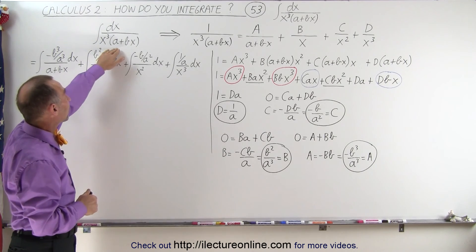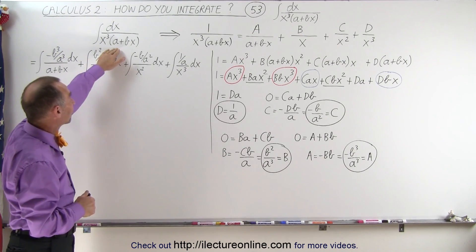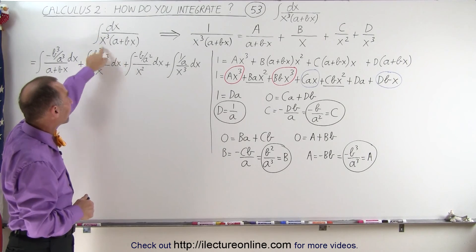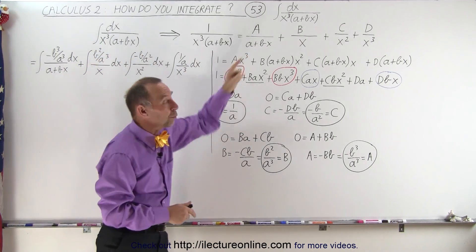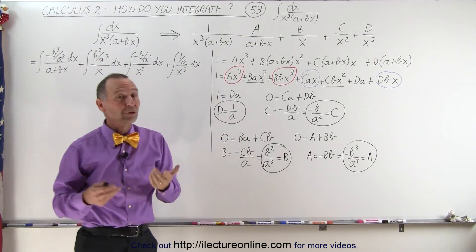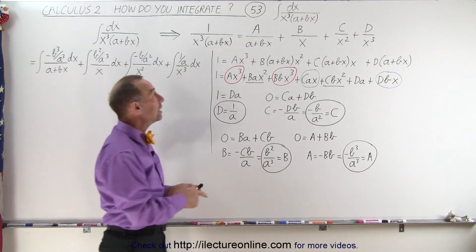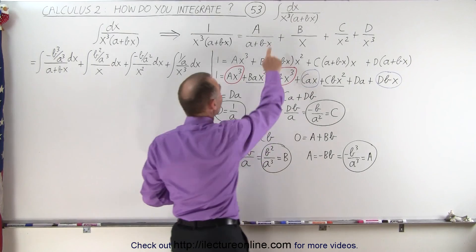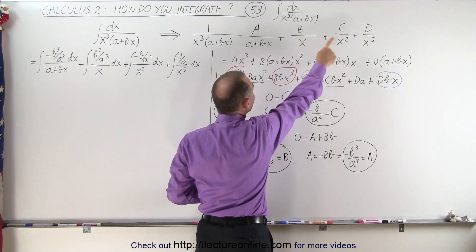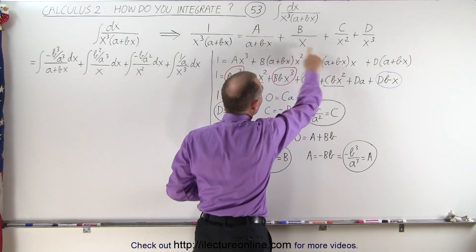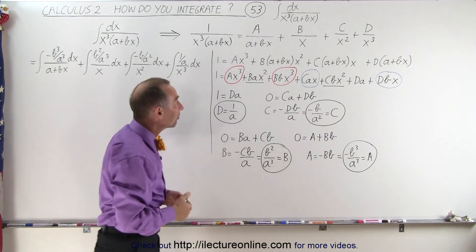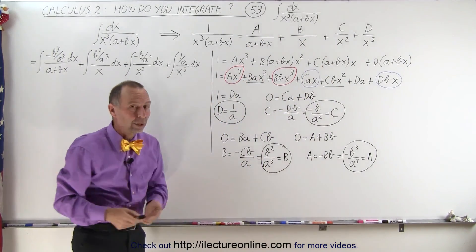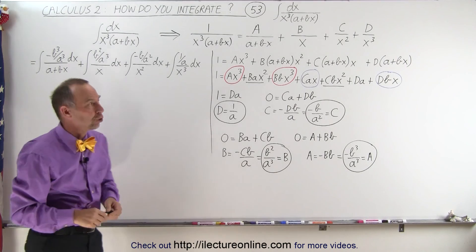Instead, let's use the concept of partial fractions. So we can write this integral as the sum of four integrals. To do that, we need to find the values of A, B, C, and D with the denominators of a plus bx, x, x squared, and x cubed.